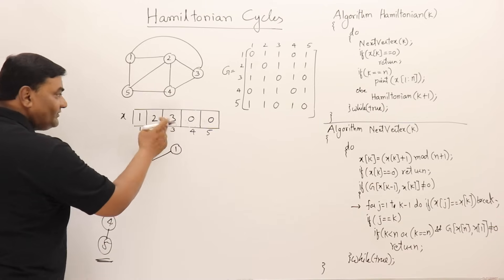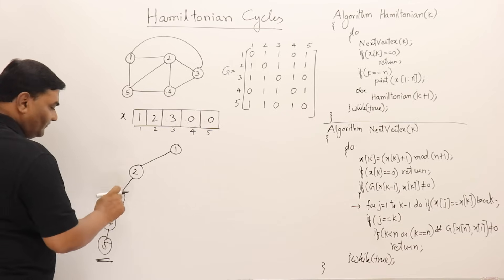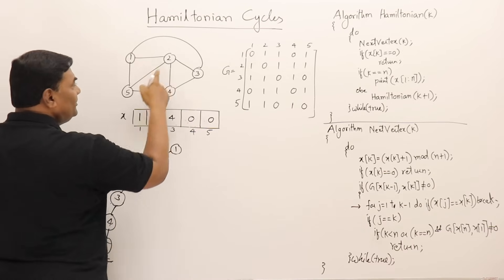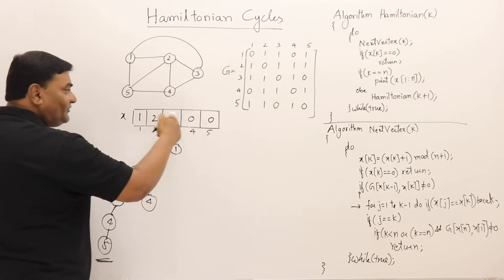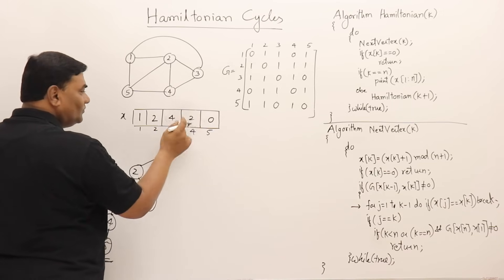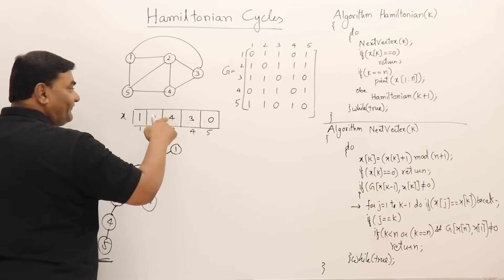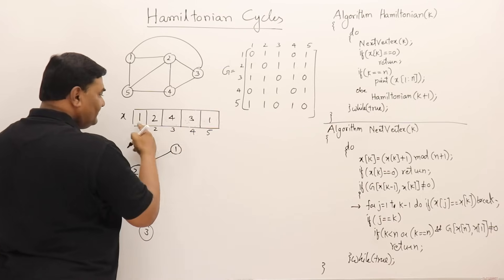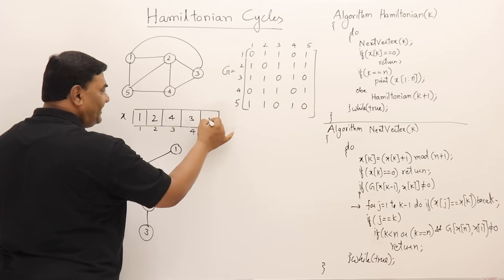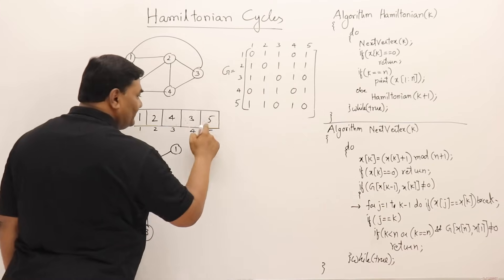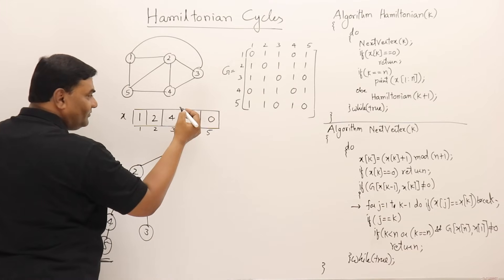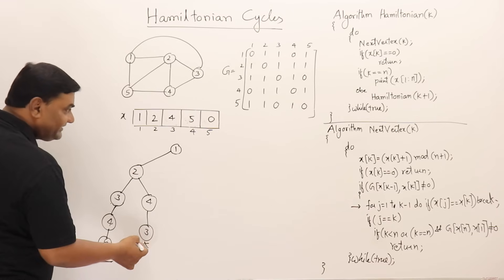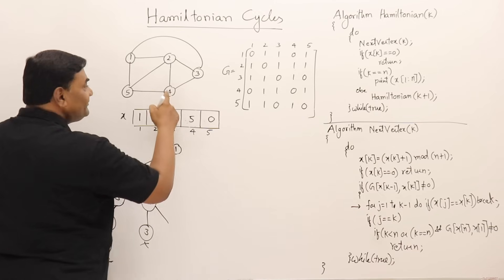Go back to the third position. Instead of 3, try 4: is there an edge from 2 to 4? Yes. So take 1→2→4. Next position: try 3 — is there an edge from 4 to 3? Yes, so take 3. Next position: can't take 1, 2, 3, 4. Try 5 — is there an edge from 3 to 5? No. Go back. Try 5 at the third position instead of 3 — is there an edge from 4 to 5? Yes. So now we have 1→2→4→5.